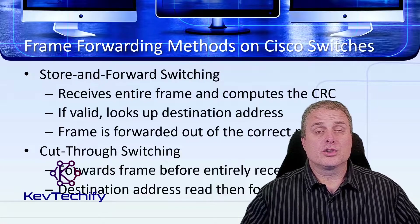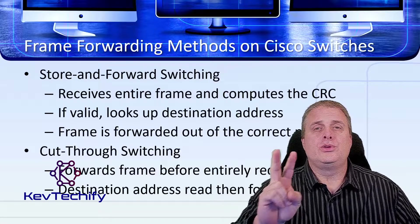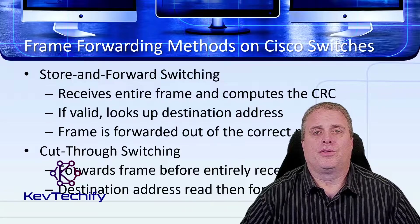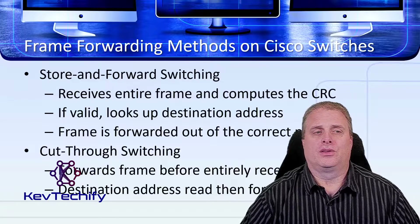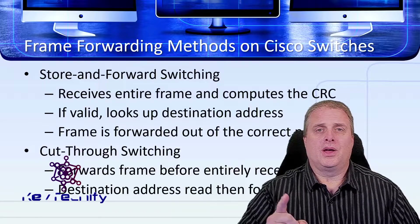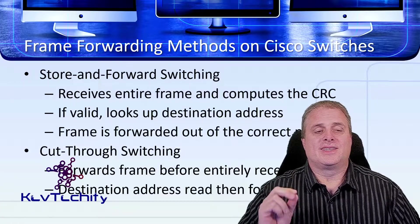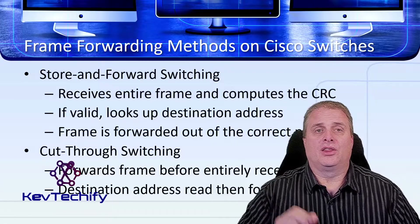On Cisco switches, there are two types of frame forwarding methods. The first method is store and forward. The second method is cut-through.